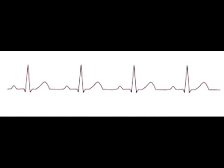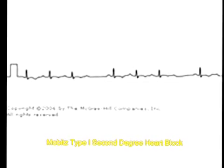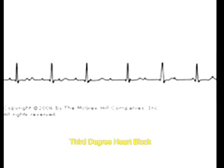In this EKG you will see increased PR interval — you can observe how the PR interval is more than 0.2 seconds. Normal PR interval is between 0.12 to 0.2 seconds. This increased PR interval is characteristic of first degree AV block. In second degree Mobitz type 1, the PR interval increases progressively until a P wave is dropped. In third degree AV block, both atria and ventricles contract independently.